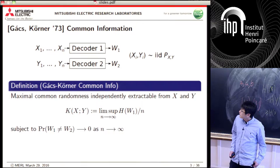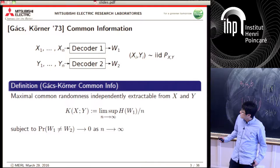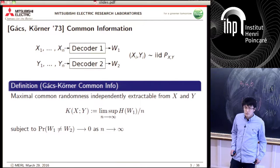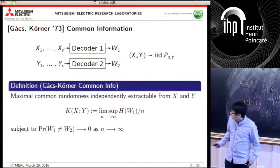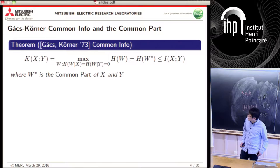Gács-Körner introduced this notion of common information, motivated operationally by a coding problem. You have X and Y drawn i.i.d. from some joint distribution. The first decoder has the X-sequence as input, the second decoder has the Y-sequence, and the decoders are trying to produce a common random variable W1 and W2 that are equal with high probability. The common info is the maximum common randomness you can independently extract from X and from Y — essentially the maximum entropy rate extractable in this coding problem.